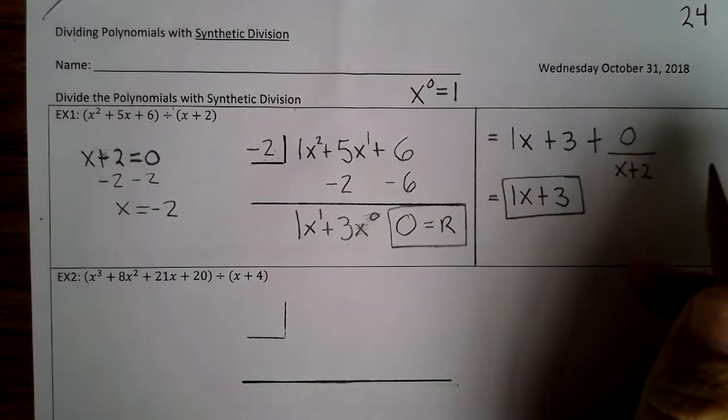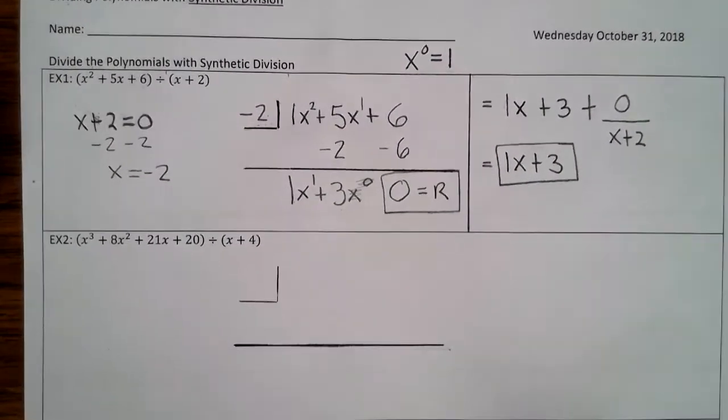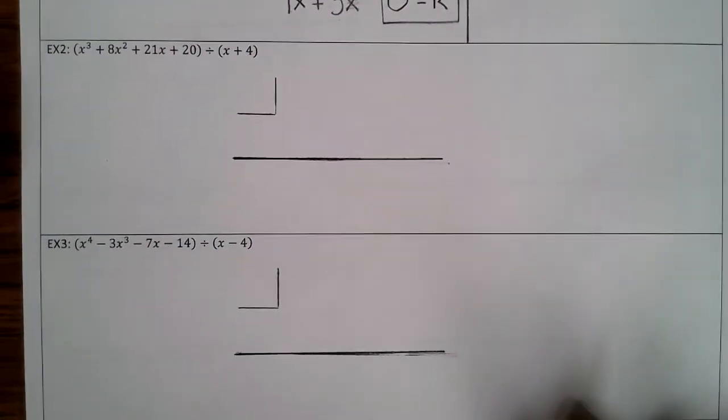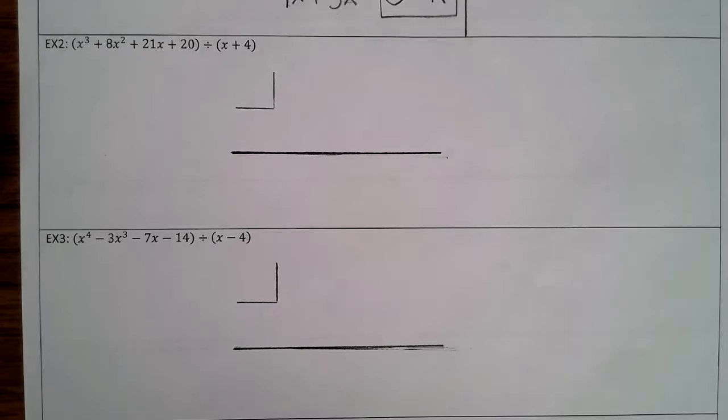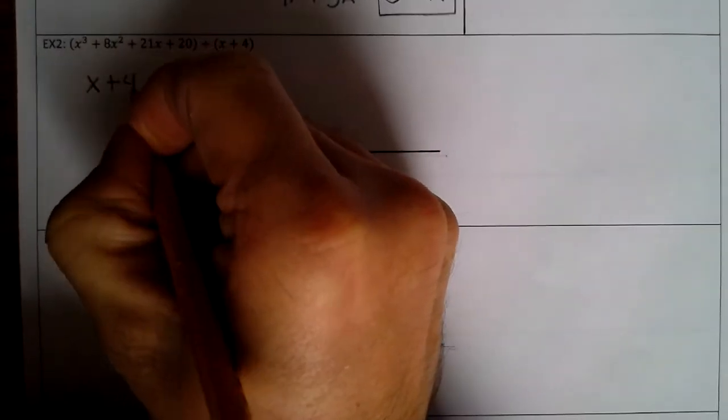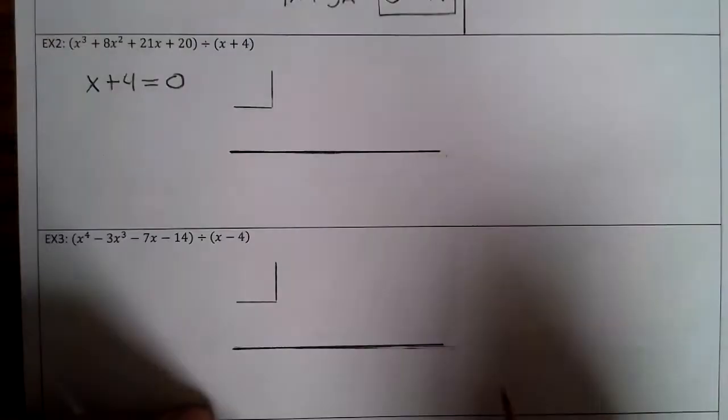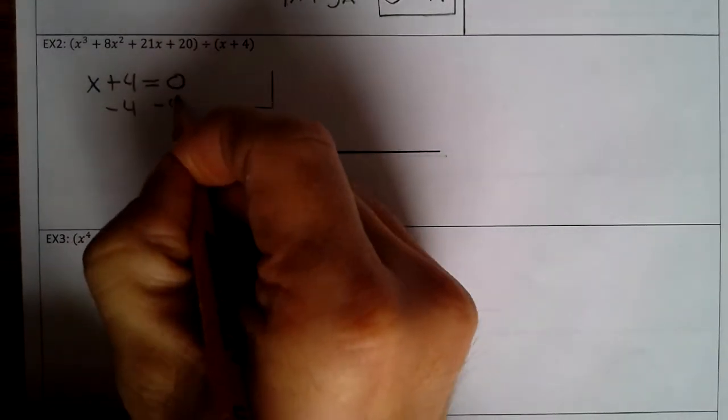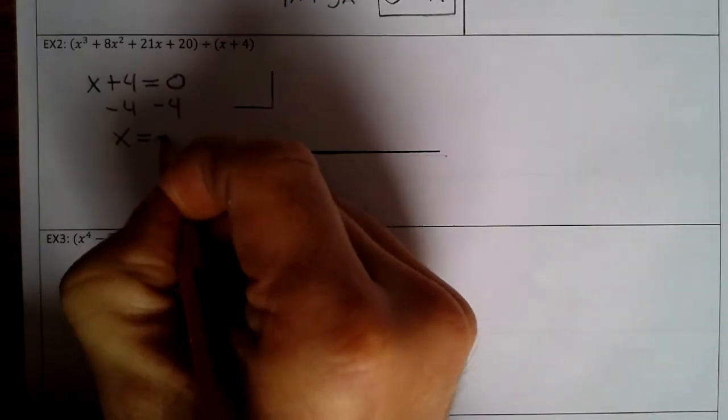Alright, let's take a look at example 2. Alright, so first step, we set x + 4 equal to 0. So solve for x, so subtract 4 from both sides. x equals negative 4. So that number goes right here.